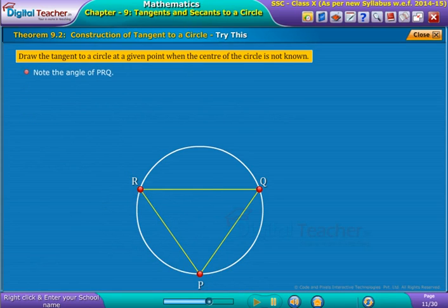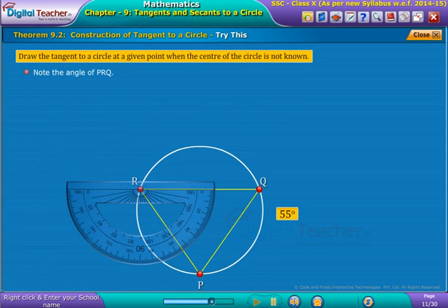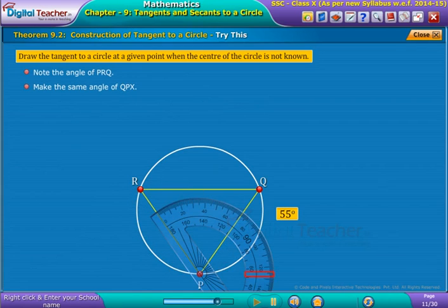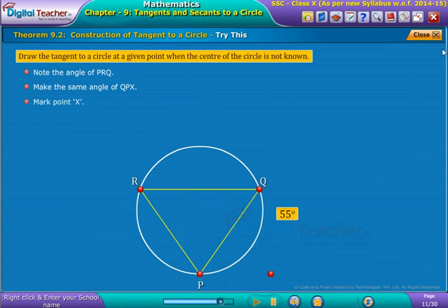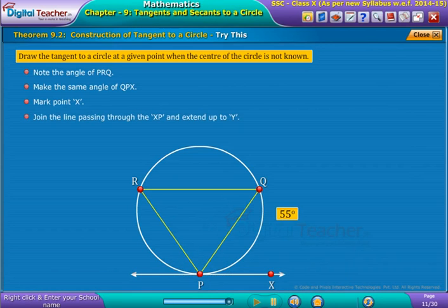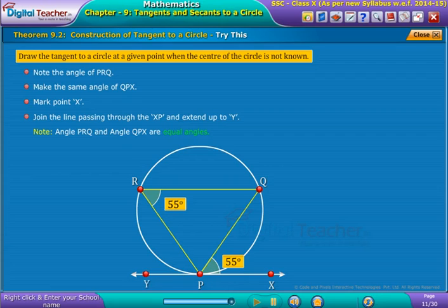Note the angle of PRQ. Make the same angle of QPX. Mark point X. Join the line passing through the XP and extend up to Y. Note that angle PRQ and angle QPX are equal angles.